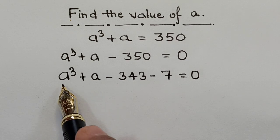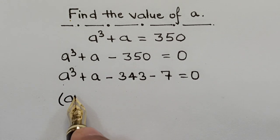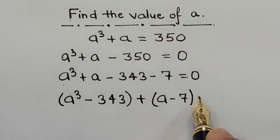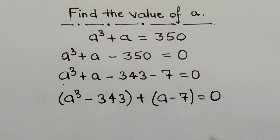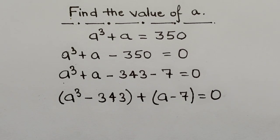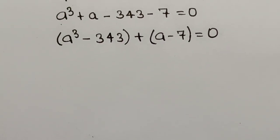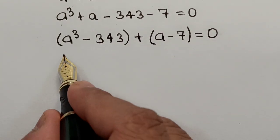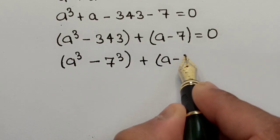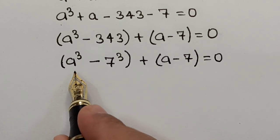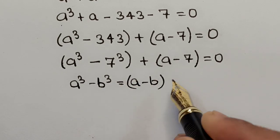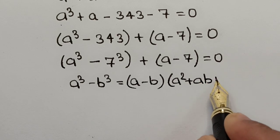We group these as (A³ - 343) + (A - 7) = 0. The advantage of this is that A³ - 343 is of the form A³ - B³, and since 343 is the cube of 7, this becomes A³ - 7³ + (A - 7) = 0. The formula for A³ - B³ is (A - B)(A² + AB + B²).